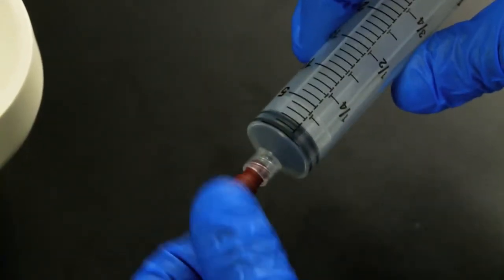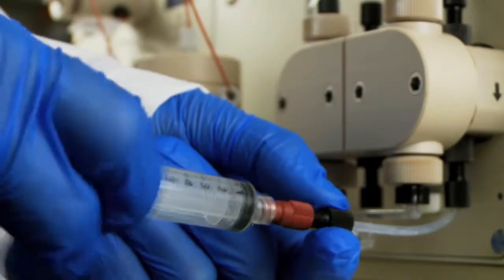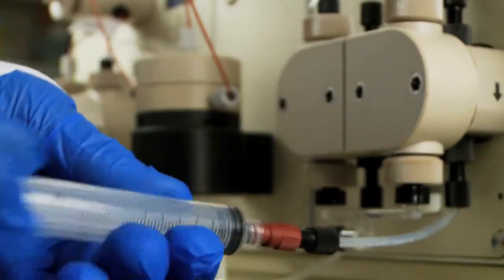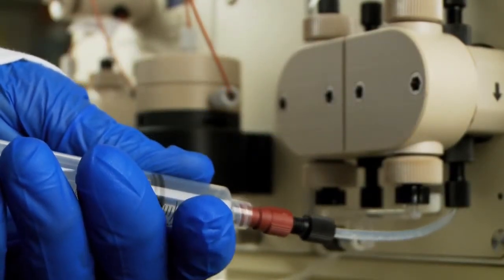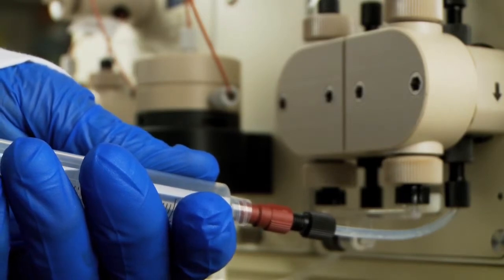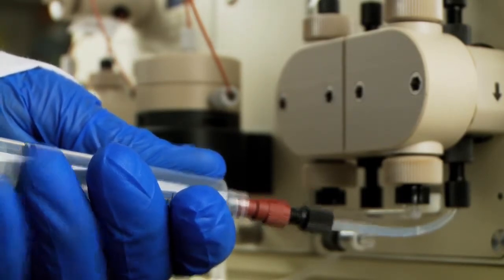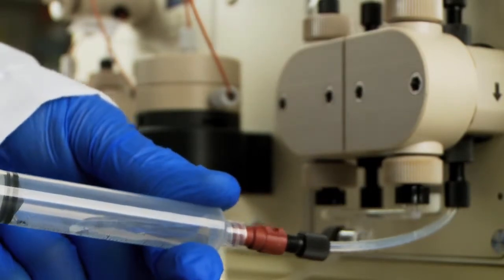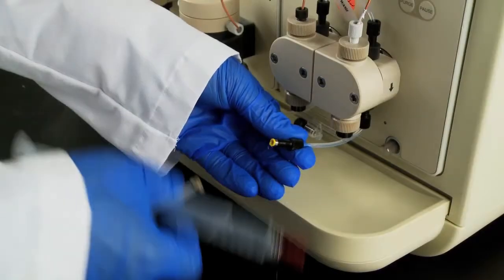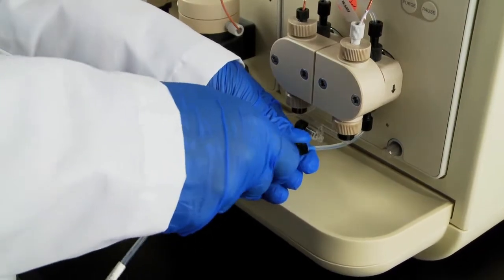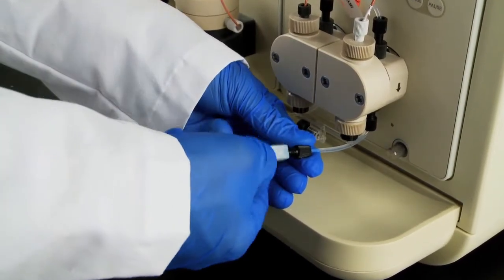Attach the quarter-twenty-eight lure adapter onto a 30 mil syringe and then join this assembly to the priming line. Withdraw the syringe plunger until washing solution appears in the syringe. Detach the syringe and adapter from the priming line and attach the outlet line with the union.